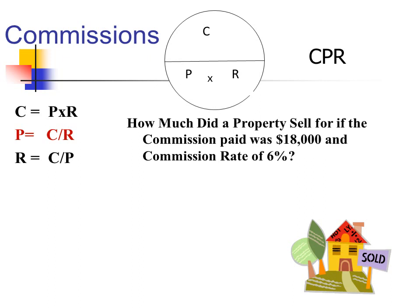Let's do a P or price problem — let's solve for price. How much did a property sell for if the total commission paid was $18,000 and the commission rate was 6%? Our formula is P equals C divided by R. So our commission was $18,000, our rate 0.06, and our price of this property must be $300,000.